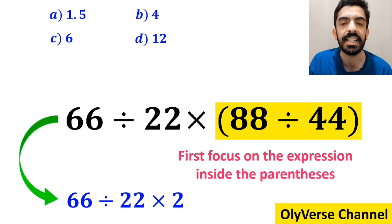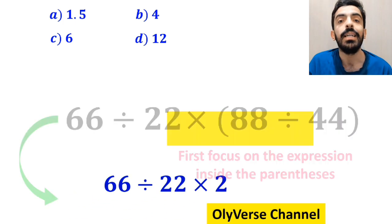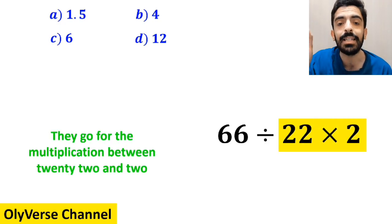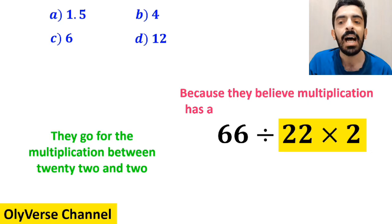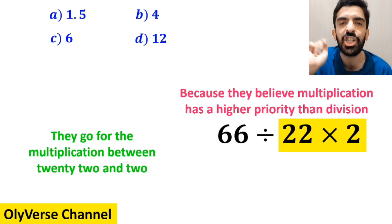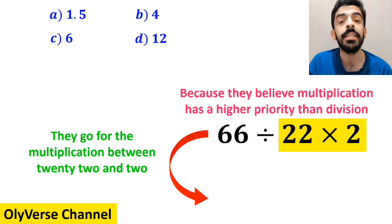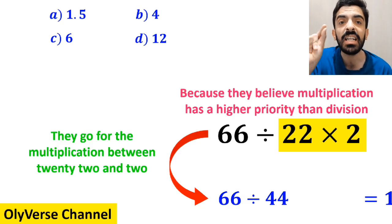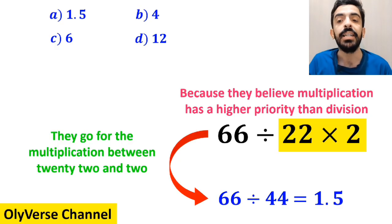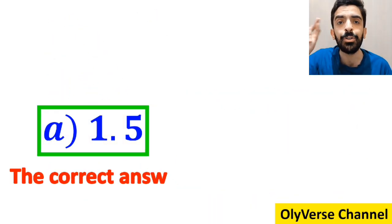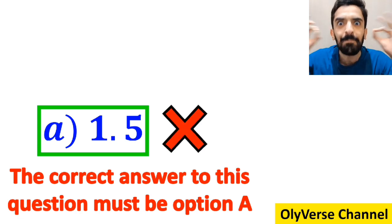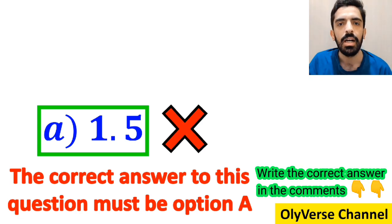they rewrite it as 66 divided by 22 times 2. In the next step, they go for the multiplication between 22 and 2, because they believe multiplication has a higher priority than division. So they simplify this expression and rewrite it as 66 divided by 44, which gives the answer 1.5. Then, without any hesitation, they conclude that the correct answer must be option A. However, this answer is absolutely wrong.